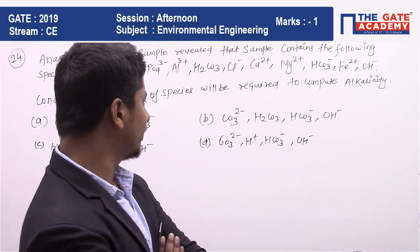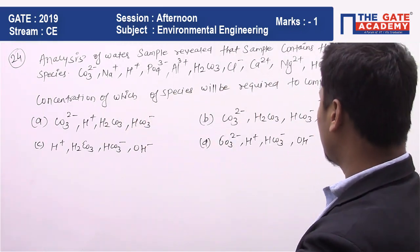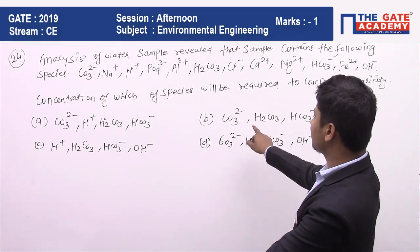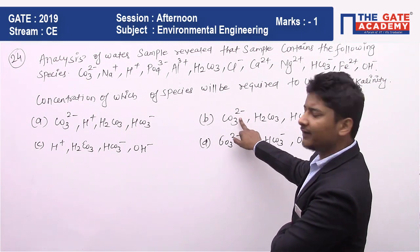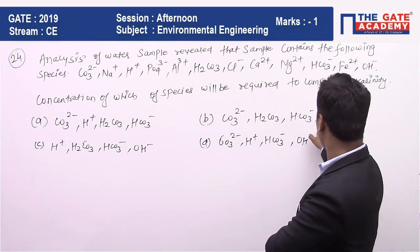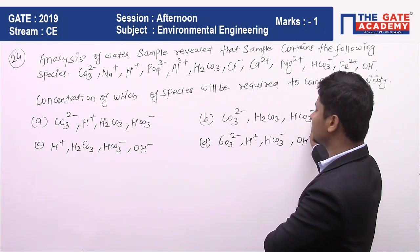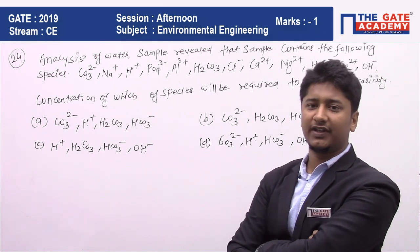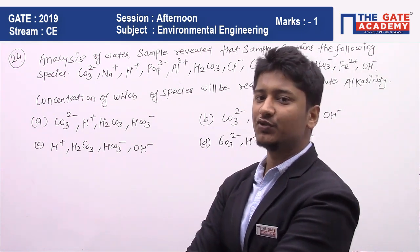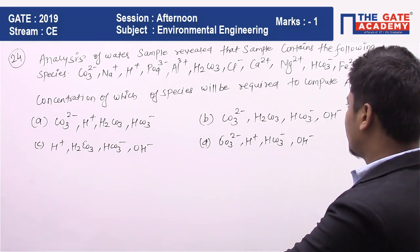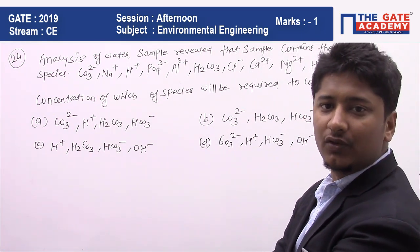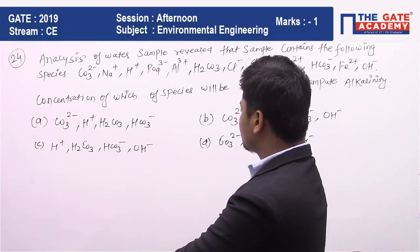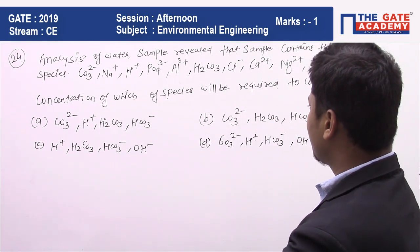Looking at option B: CO₃²⁻ is there, OH⁻ is there, HCO₃⁻ is also there. But there is also H₂CO₃ in option B. We are not sure about H₂CO₃ yet, so let's check the other options. In all the other three options — other than B — you will find H⁺ ion.